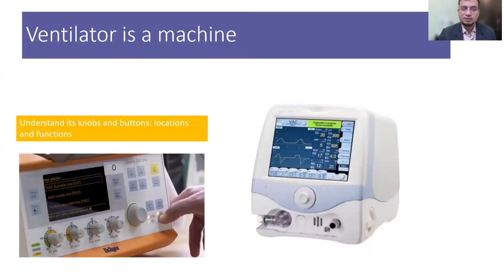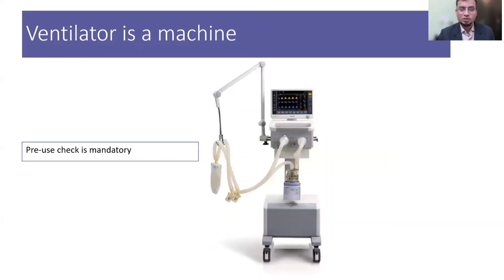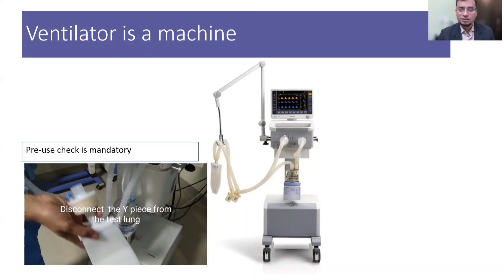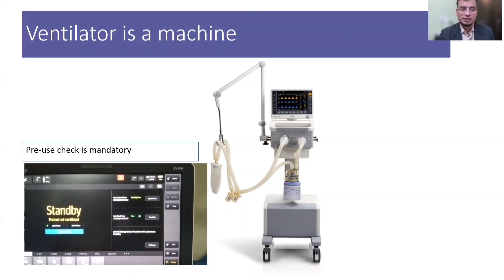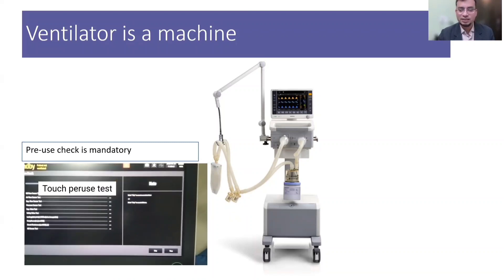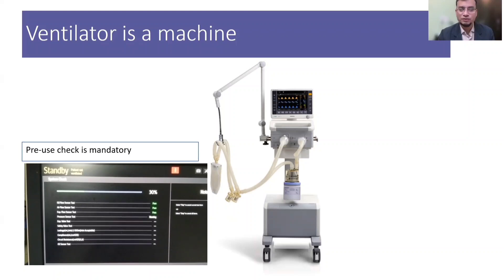The ventilator is a life support machine which assists in breathing. Because it interacts with the patient, we must understand the locations and functions of various knobs and buttons properly. Everyone who uses the ventilator on a patient must go through the user manual provided by the manufacturer. We should connect the circuit and humidifier and check the machine on a test lung. This test is called a pre-use check, designed to check the integrity of the ventilator circuit, test for leaks, and verify the functioning of various components including the humidifier system.